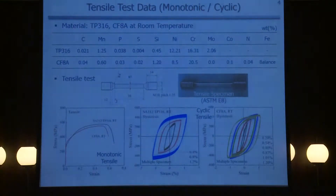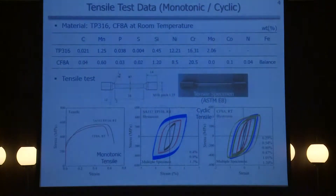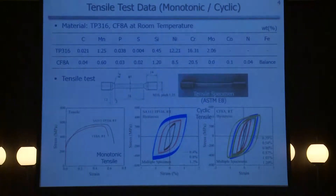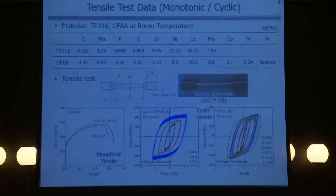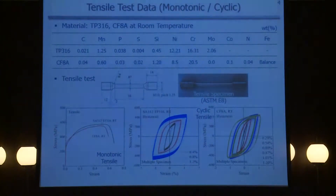This test result is from the University. We used two materials, TP316 and CF8A, at room temperature; the chemical composition is shown in the table. We conducted both monotonic tensile tests and cyclic tensile tests at several different strain ranges. For TP316, we conducted three different strain ranges: 0.4%, 0.8%, and 1.2%. For CF8A, more experiments were conducted.